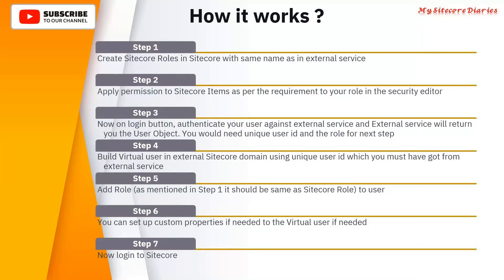Let's see how it works. Step one: you have to create Sitecore roles in Sitecore with the same name as in the external service. For example, assume you are using Azure AD. In Azure AD, if a user is given a role — say Role A — then you create that same role name in Sitecore. That is the first step.